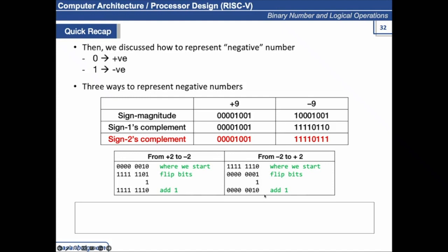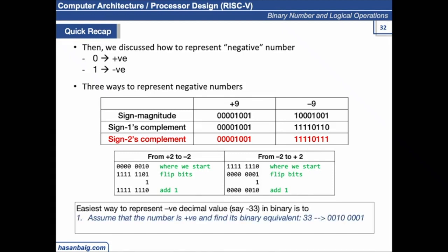If you are asked to find the binary equivalent of a negative number, for example minus 33: the easiest way is to first assume the number is positive, represent 33 in binary — which is 100001, since 32 plus 1 is 33 — then take its 2's complement to represent minus 33 in binary. The leftmost digit signifies the sign.